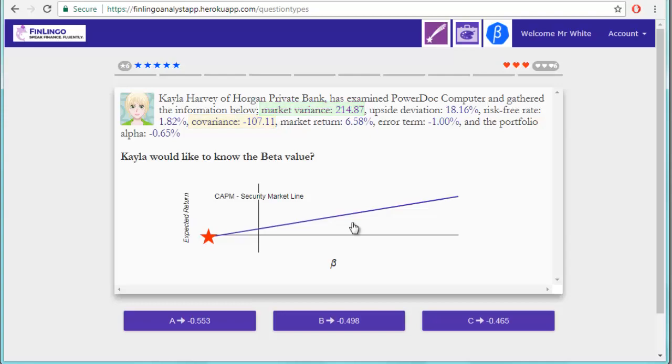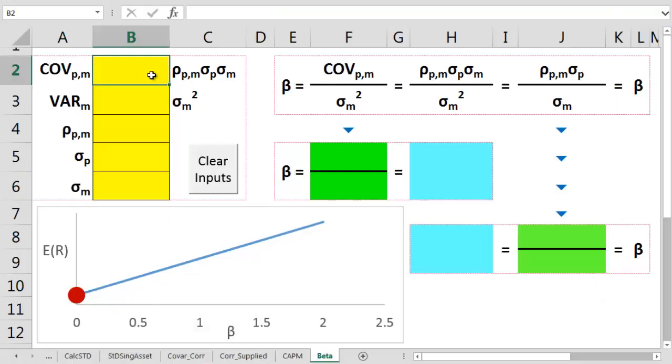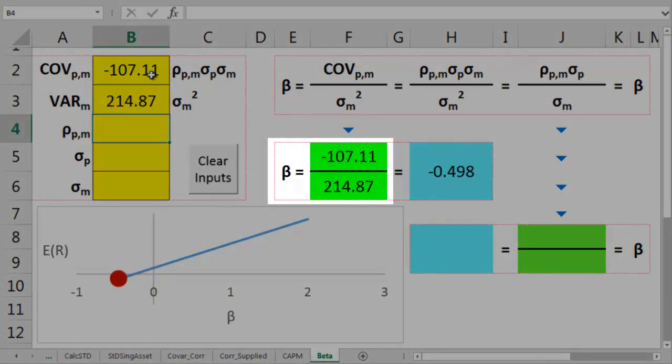then I'll move them across to a cunning Excel spreadsheet. So we plug in the covariance between the target and the market of minus 107.11, then we input the market variance of 214.87. Next up,